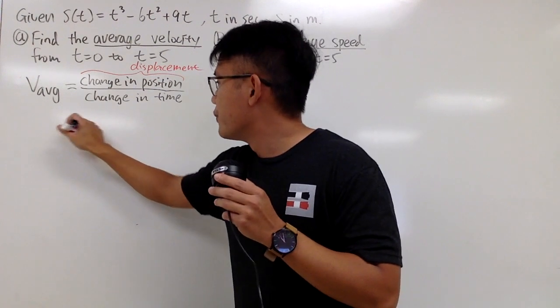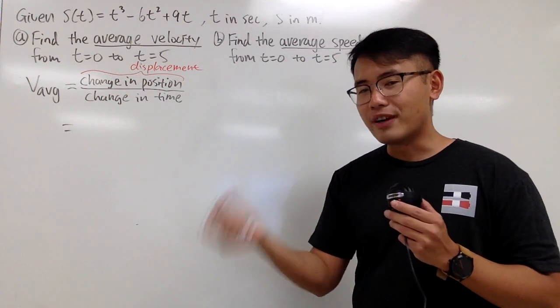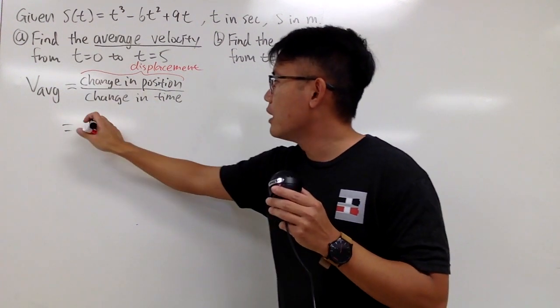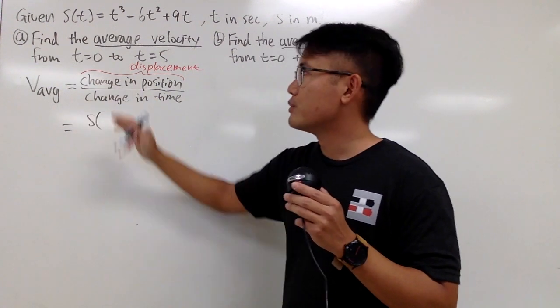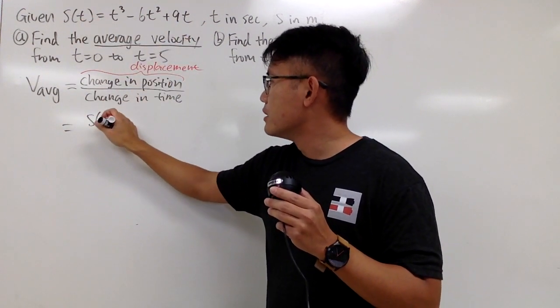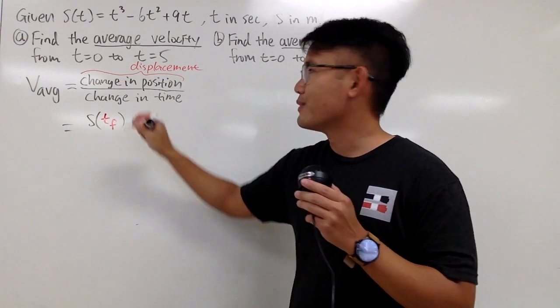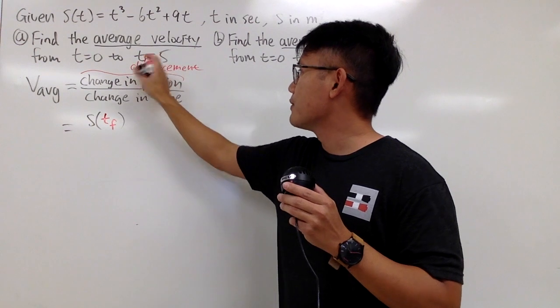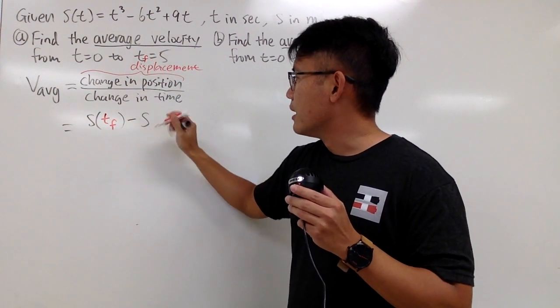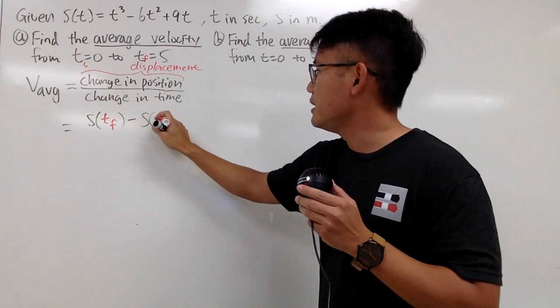To find the change in position, all you care about is two things: the final position and the initial position. In notation, I will write down s, because that's our position function, at the final time tf. Then I will have to minus the position at the initial time, ti.